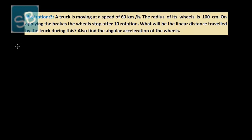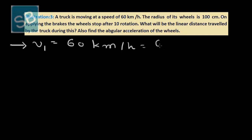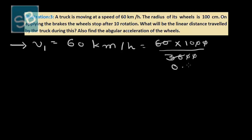Starting illustration number 3. A truck is moving with a speed of 60 km per hour, which is the initial speed V₁. Converting to metres per second: 60 × 1000/3600 equals approximately 16.66 metres per second.